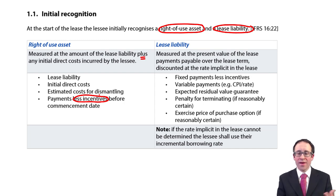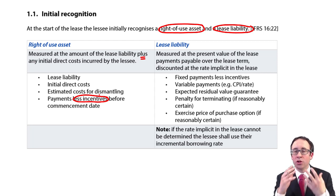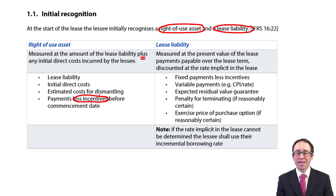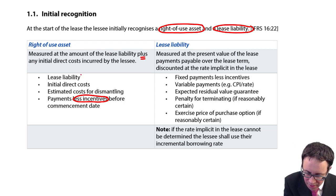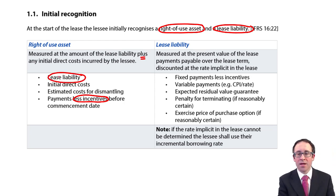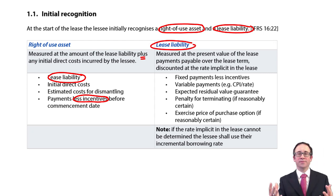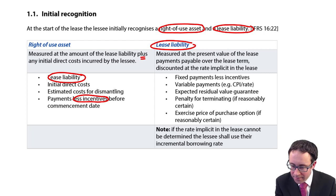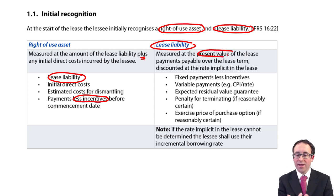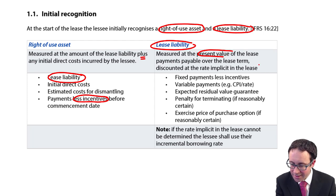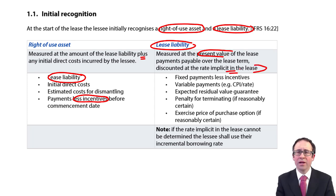The key bit then is: if we've got these direct costs, costs of dismantling, and the deduction for any lease incentives, what is the value of the lease liability? Well, the lease liability is calculated separately. It is the present value of those payments discounted at the rate implicit within the lease.